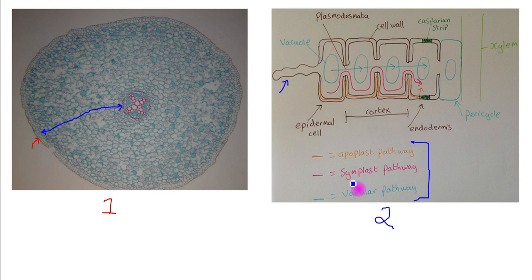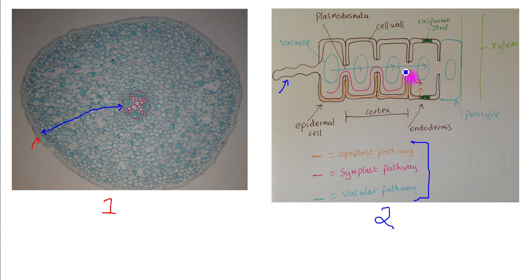The last pathway is known as the vacuolar pathway. This is a minor pathway through which water moves, represented by the blue line, and it's water movement via the vacuoles within the plant cells. So there are the three pathways through which water will move through the root.